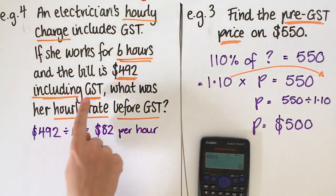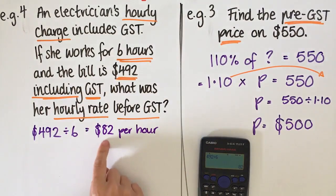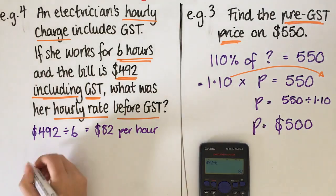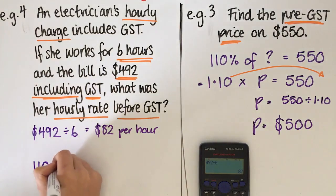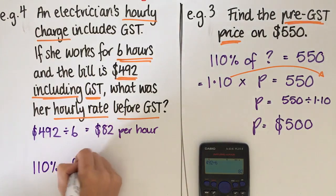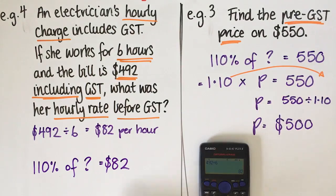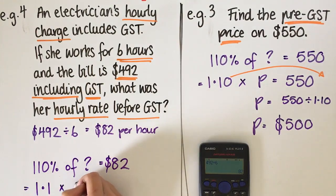Now that was including GST. So she doesn't get all of that $82. 10% of that has to go to the government. What we need to do is 110% of something will give us $82. Okay, just like this one. We don't know what the original starting price was.